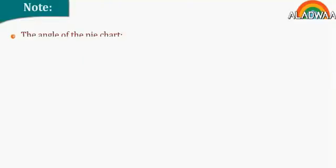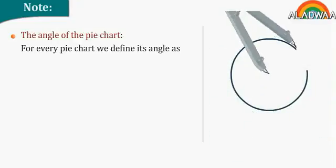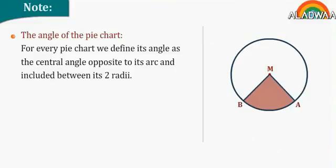Note: the angle of the pie chart. For every pie chart, we define its angle as the central angle opposite to its arc and included between its two radii. As shown in the figure, this is the angle of the shaded part.